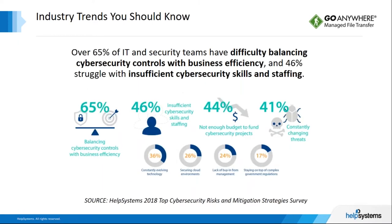This slide reminds me of the constant battle between security and convenience. With over 65 percent claiming difficulty balancing cybersecurity controls with business efficiency, this battle is still evident. Providing centralized automation could eliminate some of these pain points. Couple that with insufficient skills and staffing, and automation comes to the forefront of potential solutions. Automation can greatly reduce the amount of resources needed to complete tasks, thus reducing costs and chipping away at the 44 percent who have budgetary concerns.